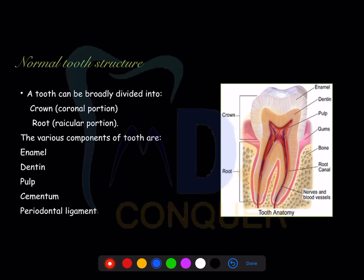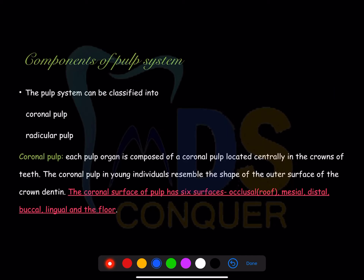The tooth can be divided into crown and root. Various contents include enamel, dentin, pulp, cementum, and the periodontal ligament overlying the cementum. This is a normal tooth structure. The crown part of the pulp contains coronal pulp and the root part contains radicular pulp — the pulp is divided into coronal pulp and radicular pulp.